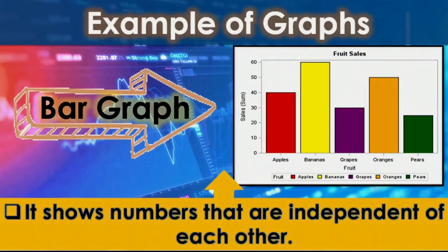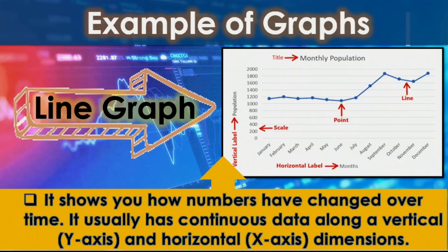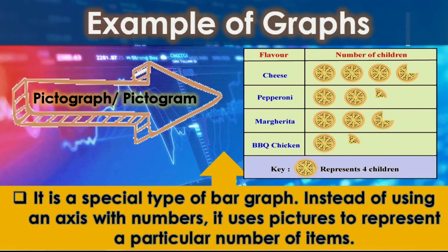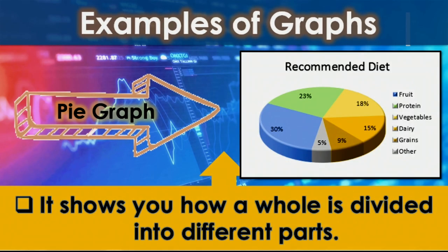Bar graphs show numbers that are independent of each other. The line graph shows you how numbers have changed over time; it usually has continuous data along a vertical y-axis and horizontal x-axis dimensions. The pictograph or pictogram is a special type of graph — instead of using an axis with numbers, it uses pictures to represent a particular number of items. The pie graph shows you how a whole is divided into different parts.